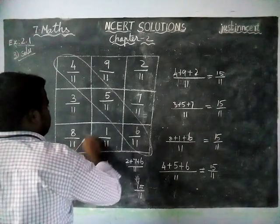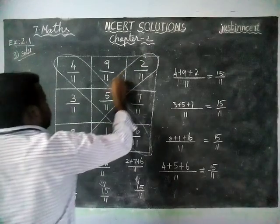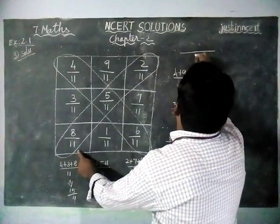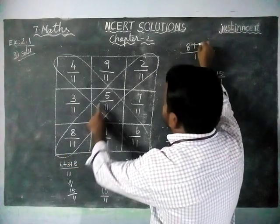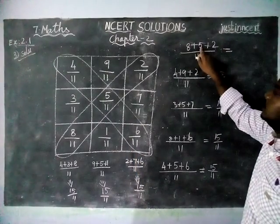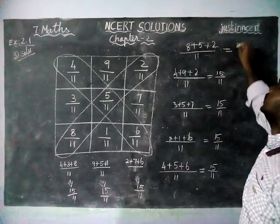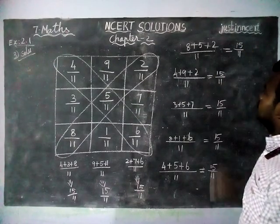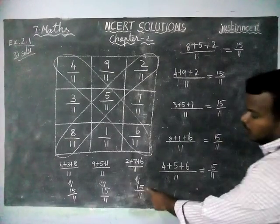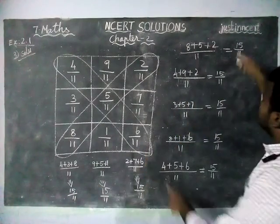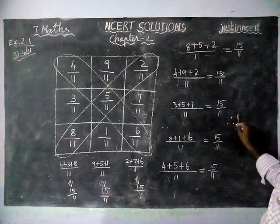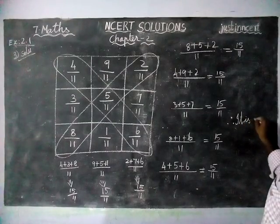Next diagonal we are going to take. Common denominator 11: 8 plus 5 plus 2 — 8 plus 5 is equal to 13, 13 plus 2 is equal to 15 by 11. So all the rows, all the columns and the two diagonals give 15 by 11. Therefore it is a magic square.